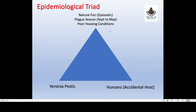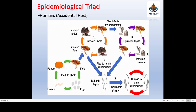The epidemiological triad consists of the environment, host, and agent. The agent is the bacterium Yersinia pestis. Humans are the accidental host — meaning humans are not supposed to be infected with the plague, but are accidentally infected. The environment refers to the natural foci where Yersinia pestis first exists in the natural environment. The plague season is from September to May, and poor housing conditions are a contributing factor.